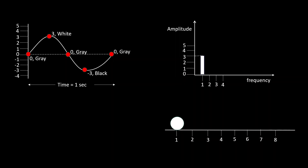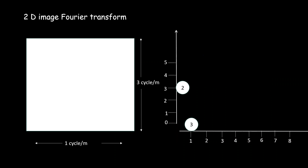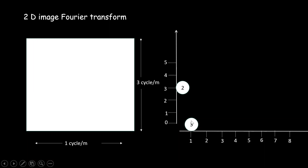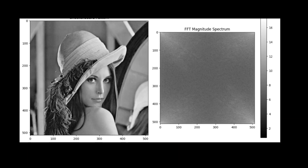Generally our images are two-dimensional, so when we have a 2D image we have to perform the Fourier transform both row-wise and column-wise. For example, row-wise we may have a wave of 1 cycle per meter with amplitude 3, giving a pixel intensity of 3. Column-wise we may have a frequency of 3 cycles per meter with amplitude 2, giving a pixel intensity of 2. Using the famous Lena image, when transformed into the frequency domain, we get frequency values represented as pixel intensities in this form.